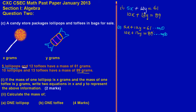When solving by elimination, you choose which letter to eliminate. I'm going to choose to eliminate the X's. To do that, I'll use the 5 multiplying X in equation 1 to multiply equation 2, and the 10 multiplying X in equation 2 to multiply equation 1. So: 10 times 5x gives 50x.